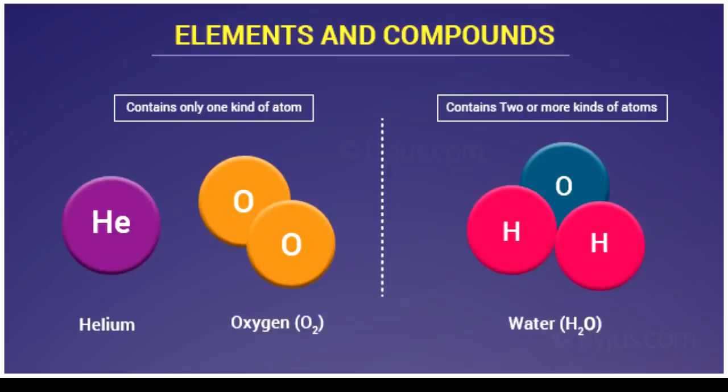If you combine a hydrogen atom and an oxygen atom, they are different kinds of atoms. Hydrogen and oxygen are each elements. When combined, they form a compound.